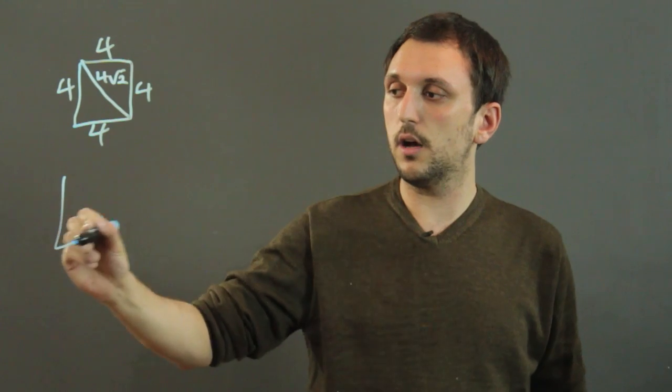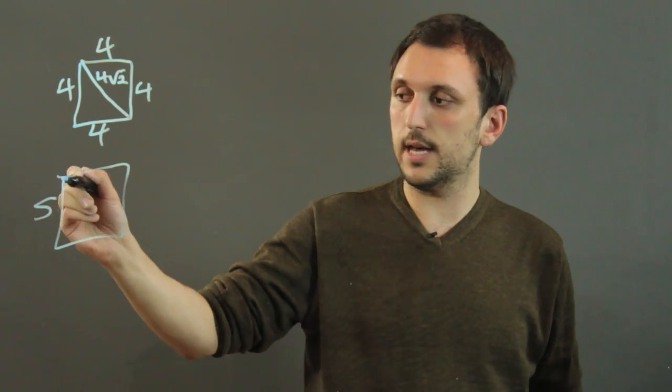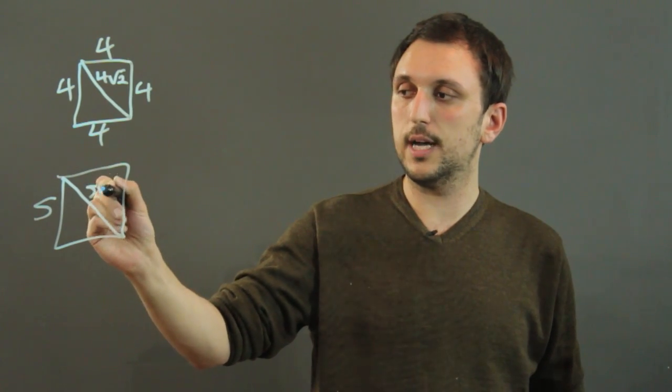And really, any square, if we call this side S, then the diagonal will be S times root 2.